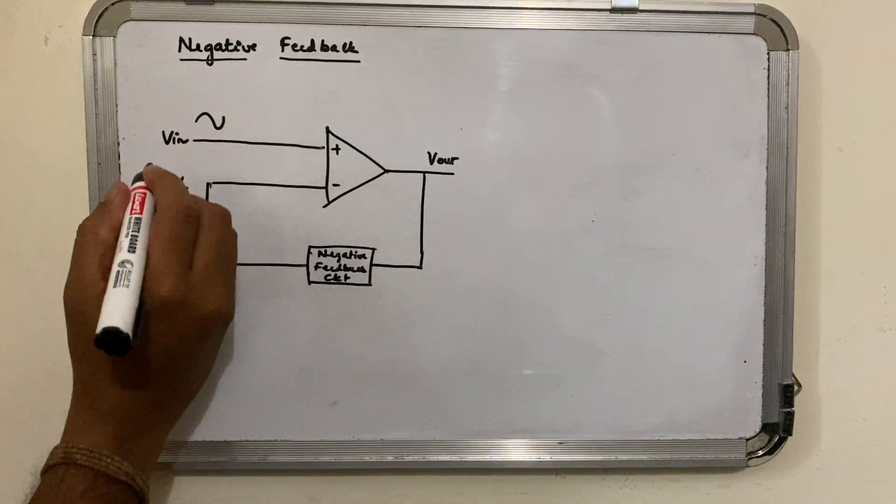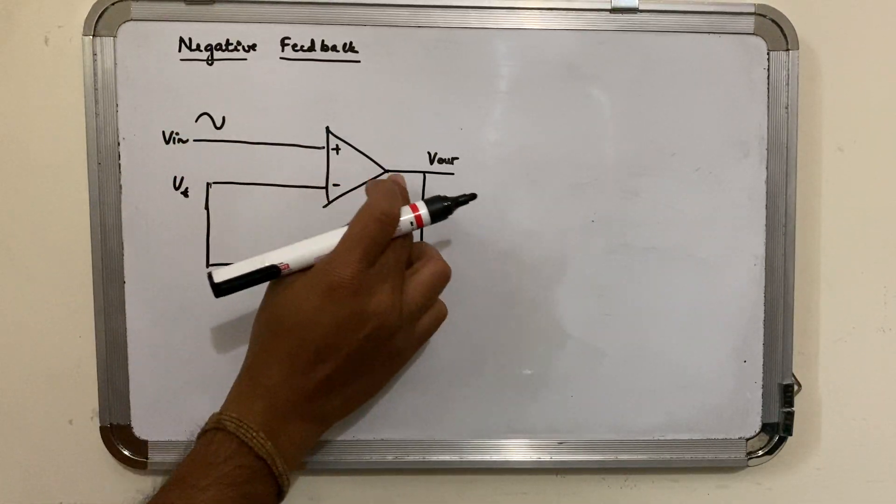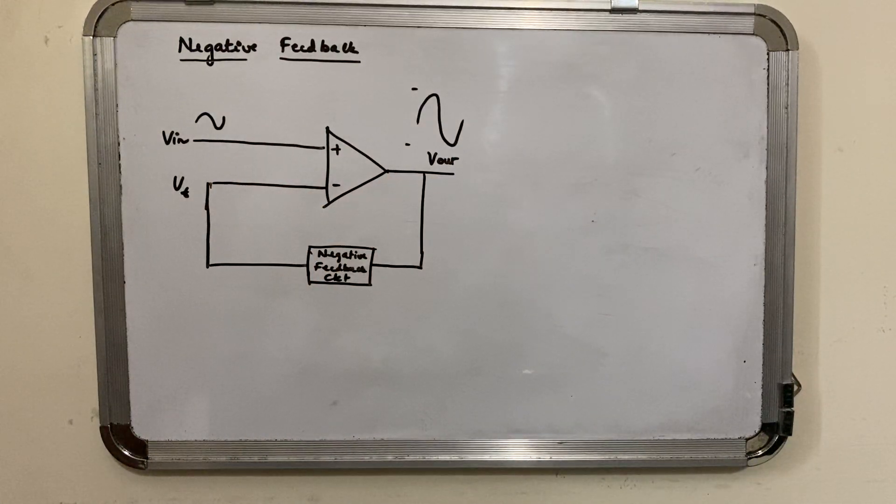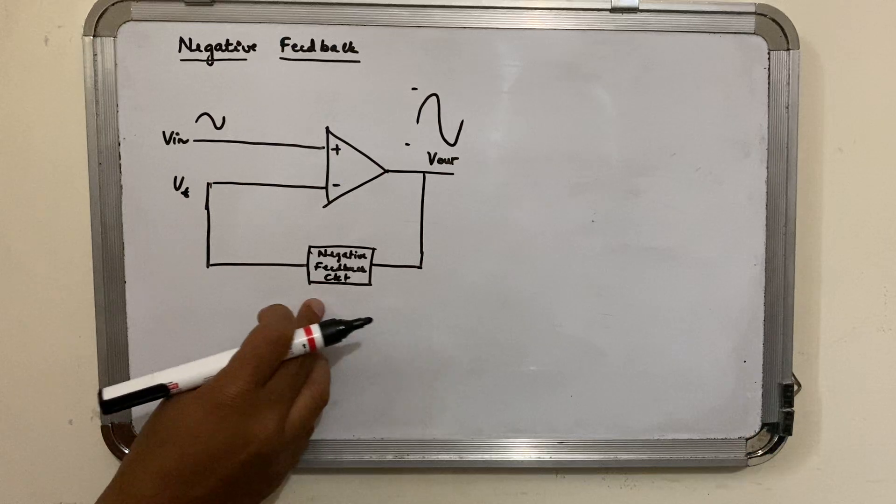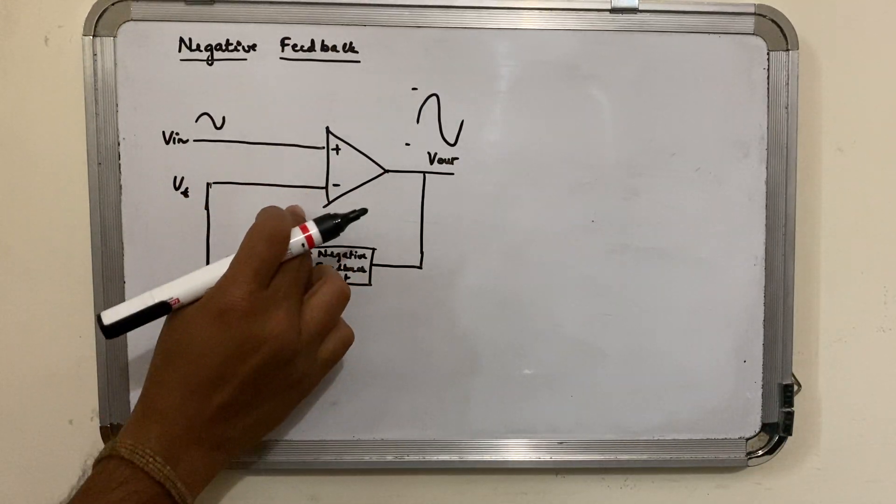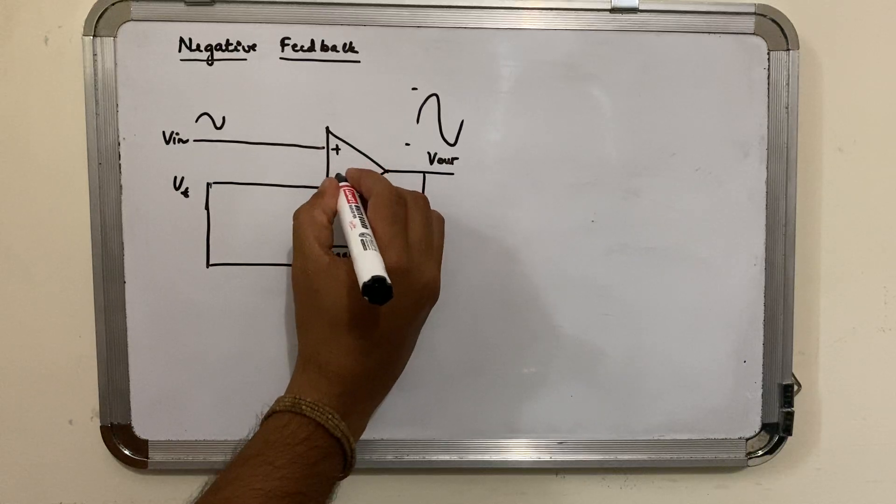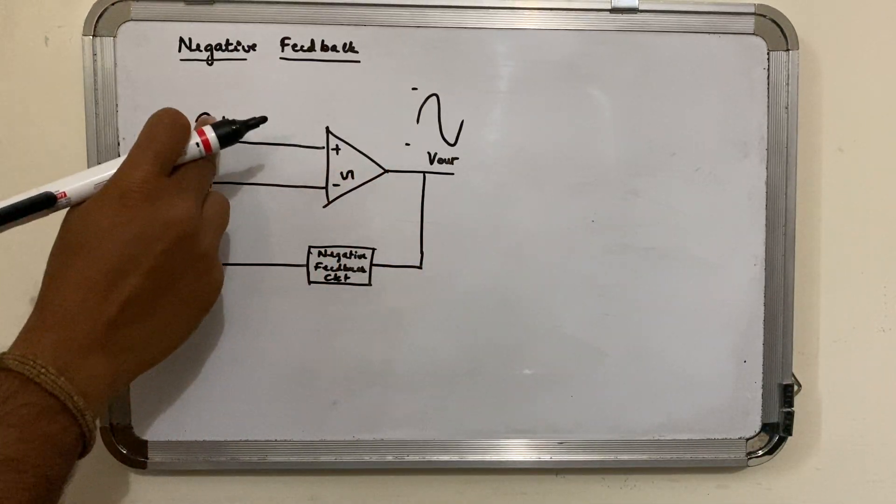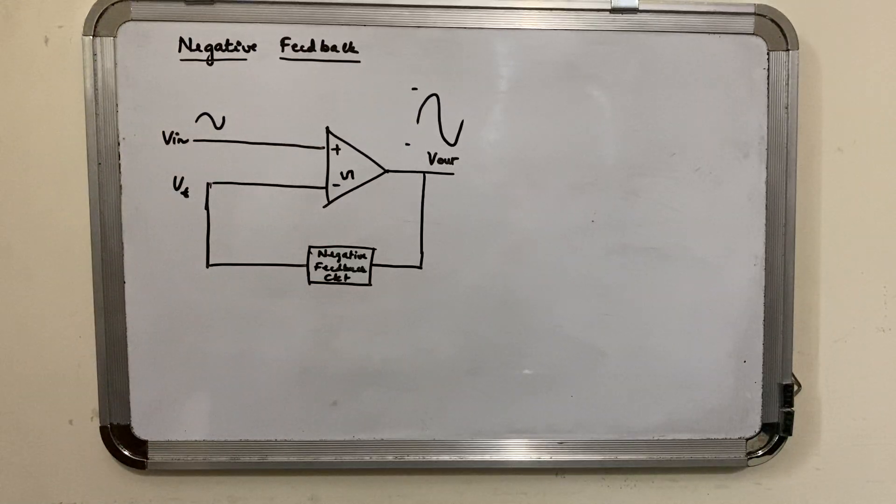Say for example you give a sine wave here - the op-amp will amplify it. You'll get the amplified version of the input. Now if you take part of it and give it back to the negative terminal, this negative terminal will provide 180 degree out of phase signal with respect to the input.